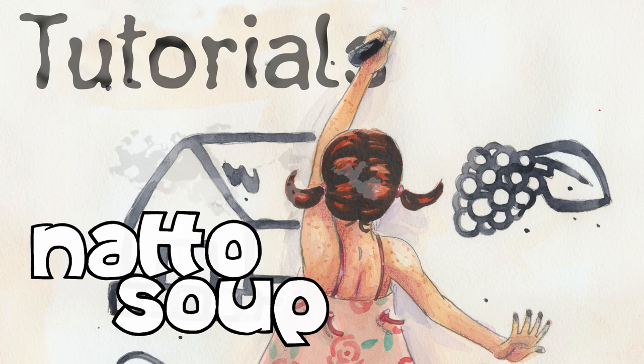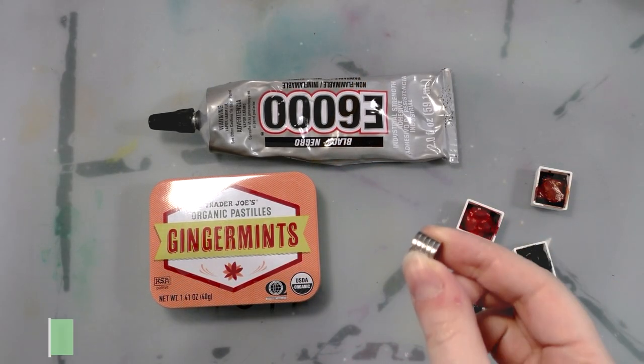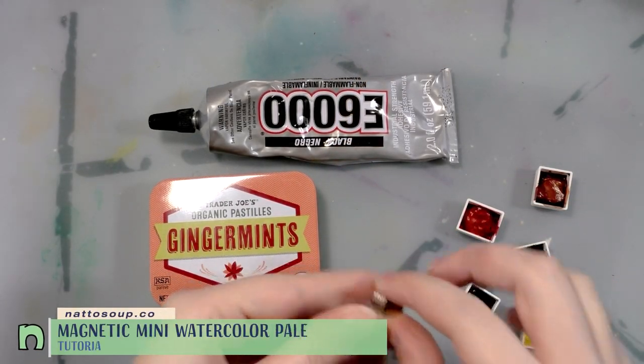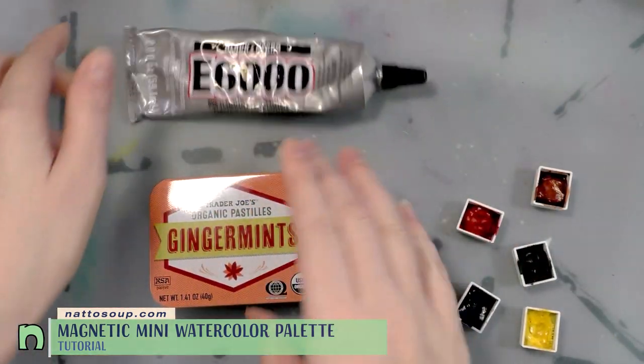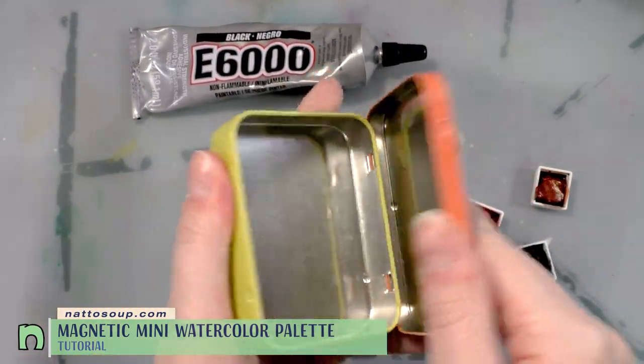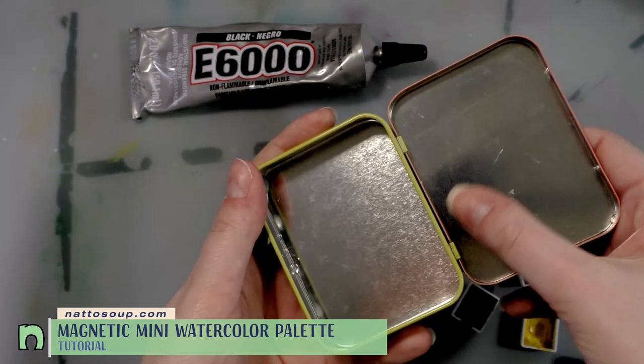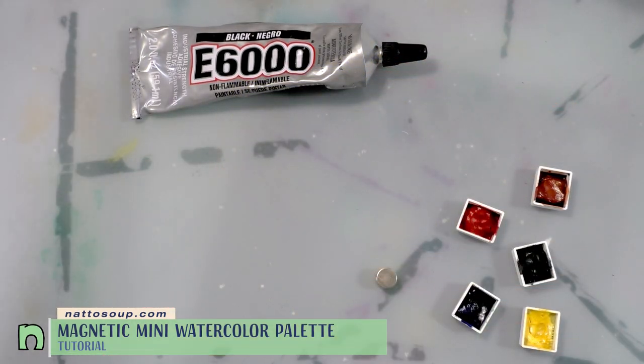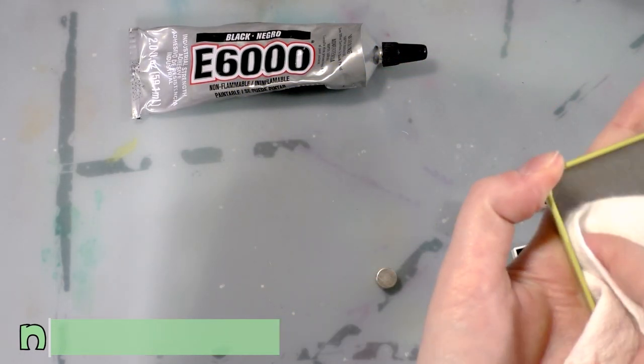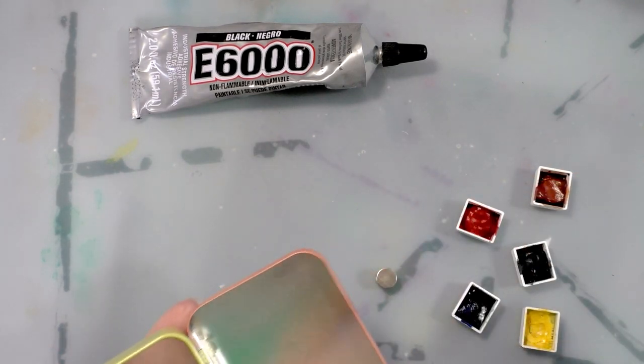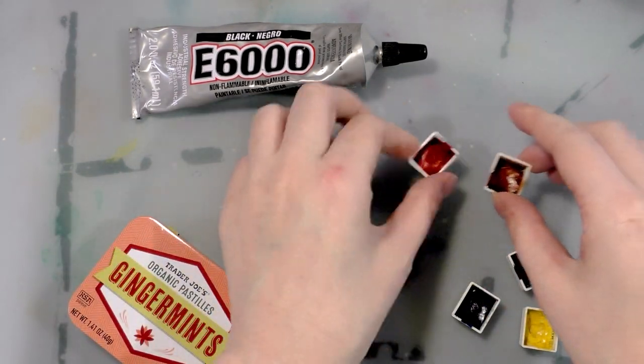The materials you're going to need for this tutorial are flat back magnets. I have five of them here. E600, your metal tin and this is one from Trader Joe's and it's already been cleaned out although there is a little bit of residual water in it. So I'm just going to wipe that out really quick and either empty half pans or half pans you fill.